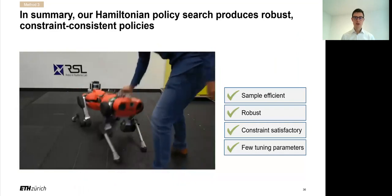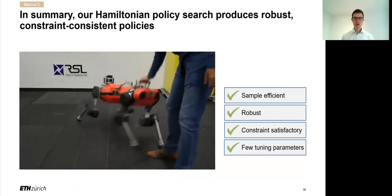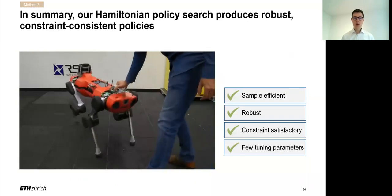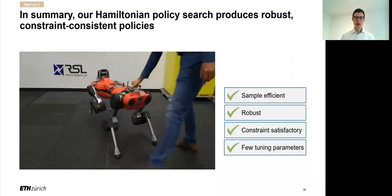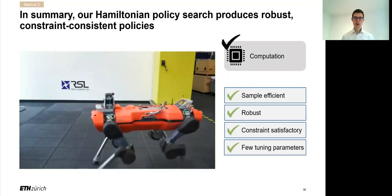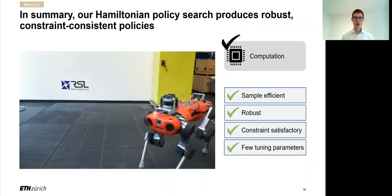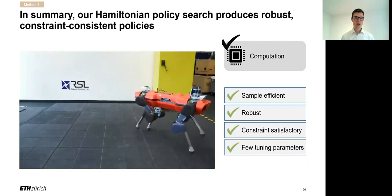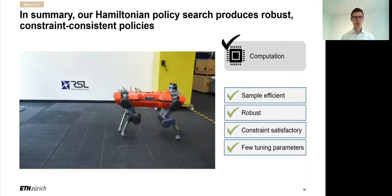So overall, putting everything together, we have an efficient policy search algorithm that is robust and constraint satisfactory and requires little tuning. And that solves the computational problem for both of the previous algorithms. And in fact, we can learn from any kind of optimal control that maintains an internal value function representation, which naturally most of them will do.